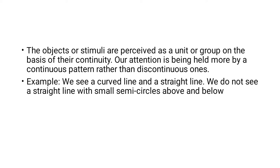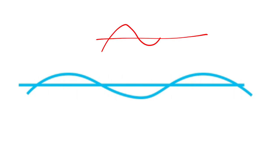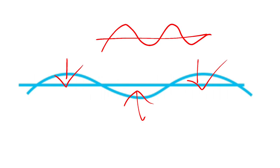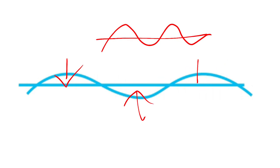Objects are also grouped based on continuity or discontinuity. For example, when asked to describe a figure with a straight line and a curved line intersecting, you would first say 'one straight line and one curved line' — you would not initially perceive the semicircles in between. Only if asked further would you mention the semicircles. So instead of perceiving the semicircles, you perceive a curved line. This is how perception varies in the principle of grouping.